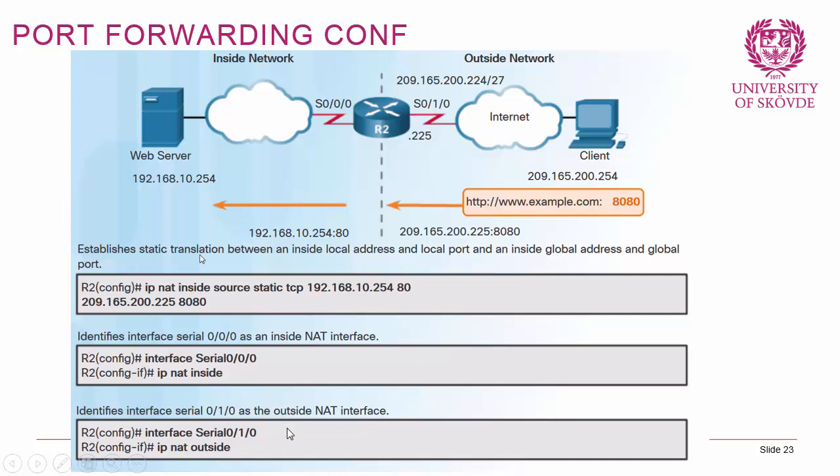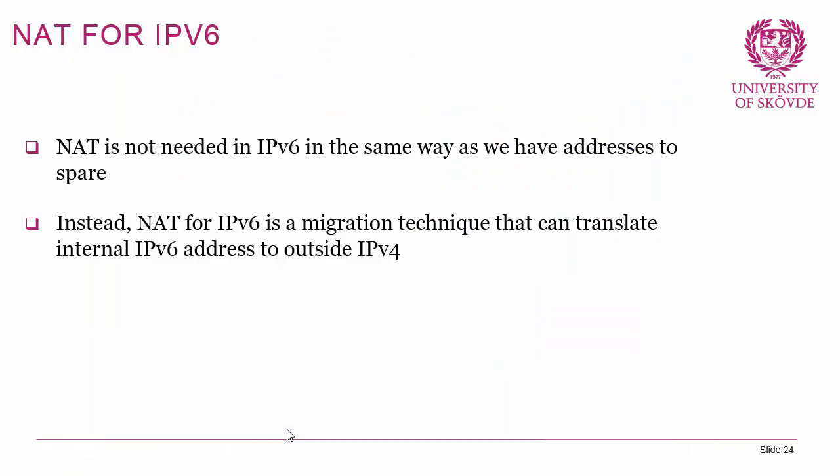NAT is not needed for IPv6 in the same way as for IPv4, because there is an enormous abundance of IPv6 addresses — more than the number of grains of sand in the Sahara or bacteria in the world. However, there is a technique called NAT64 which is a migration technique that translates internal IPv6 addresses to outside IPv4 addresses when IPv4 connectivity with the internet is required, since not all of the internet supports IPv6.